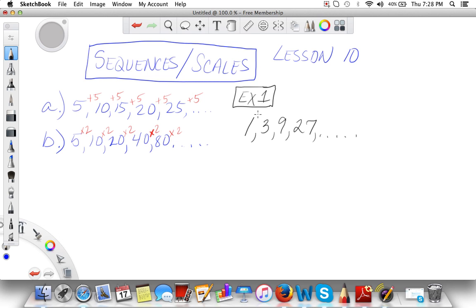In order to get from 1 to 3 we have to multiply: 1 times 3 gives us 3, 3 times 3 gives us 9, 9 times 3 gives us 27. So if we take 27 times 3, our next term in the sequence is going to be 81.